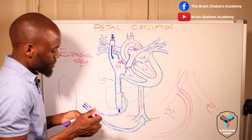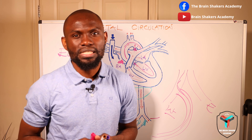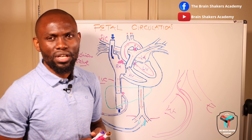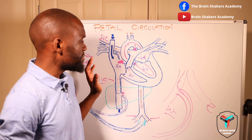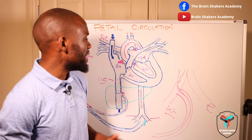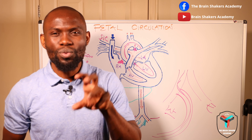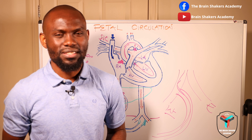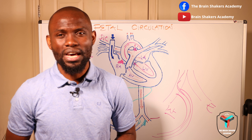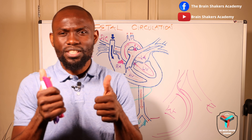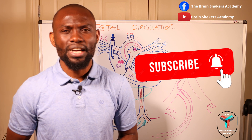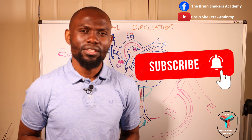That is basically what happens with the fetal circulation. The temporal structures — the ductus venosus, foramen ovale, and ductus arteriosus — facilitate the smooth flow of blood within the fetus during prenatal life. But once the fetus has been born and you have a neonate, all those temporal structures will have to close and disappear. Do look out for a video on what happens to these temporal structures after birth. If you found this video helpful in understanding how blood flows from the placenta to the fetus and back, please give a thumbs up, share the video, and subscribe to Brain Shakers Academy. Thank you so much for watching and I will see you in the next one.